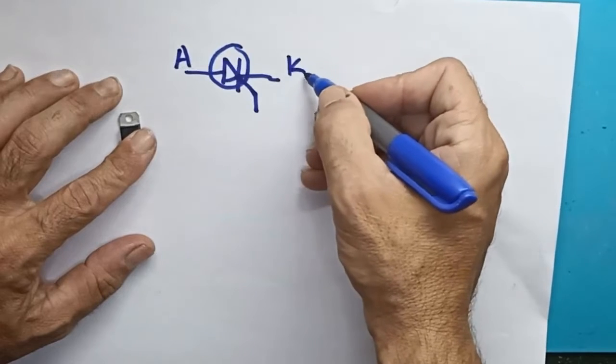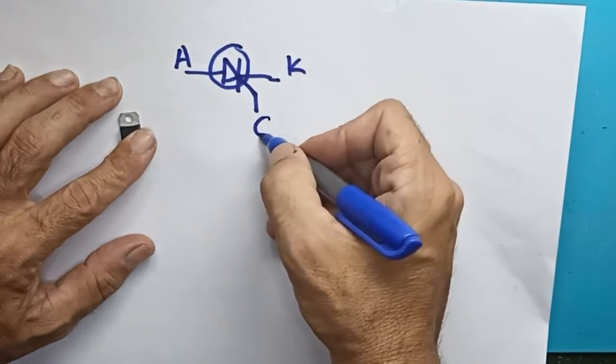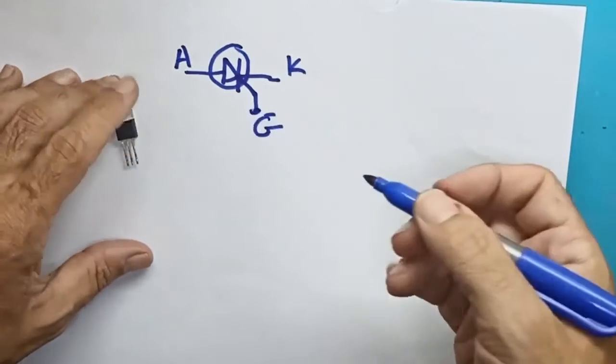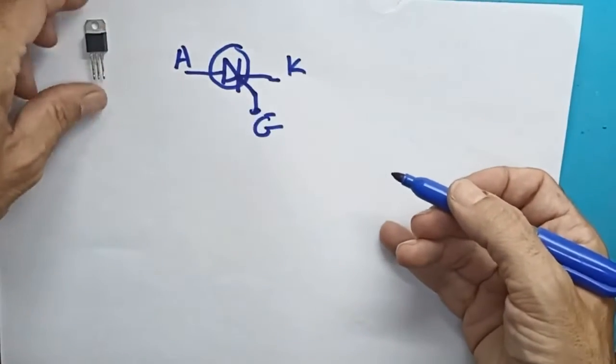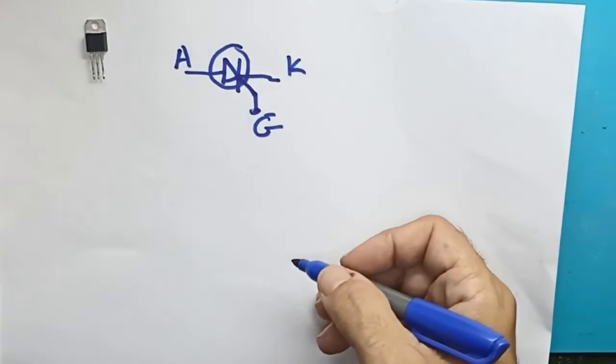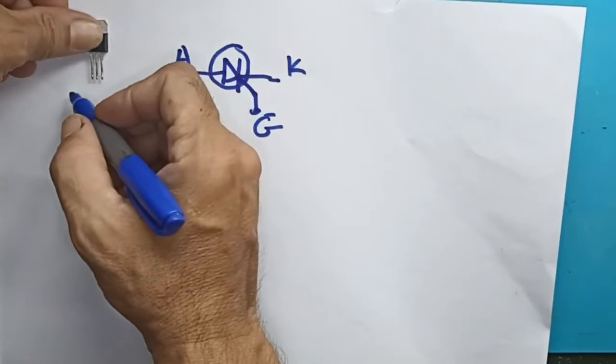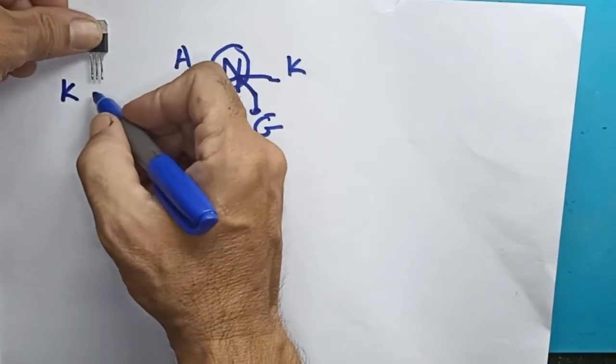So we have anode, cathode, and the third leg is the gate. It is the gateway for the diode to open. It is essentially a controlled switch. Imagine a combination of a relay with a diode, a relay that conducts only from one side.